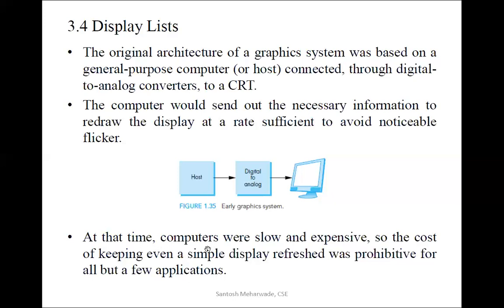As we go a few decades back, those computers were very slow compared to current computers, and they were expensive also. If you compare the cost of 512 MB RAM at that time versus 4 GB or 8 GB RAM today, you can see it is very cheap now — we are getting high-capacity computer components at very cheap prices. As we go a few years back, the capacity of a particular component was very less and it was very expensive, so maintaining the refresh rate was very hectic at that time.